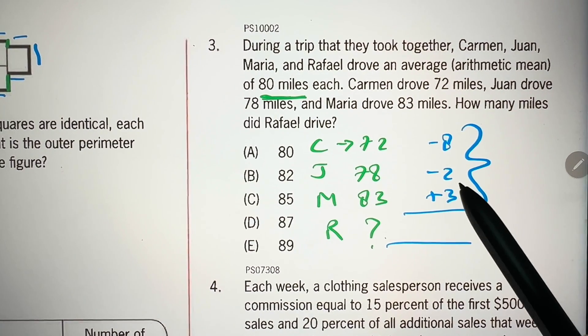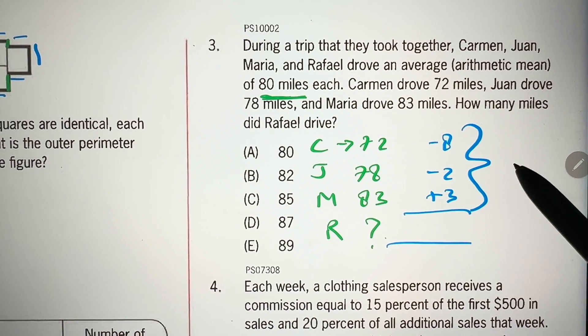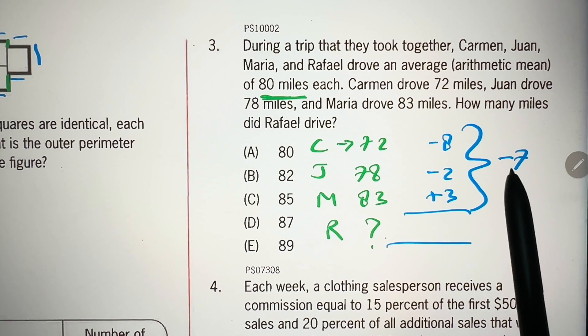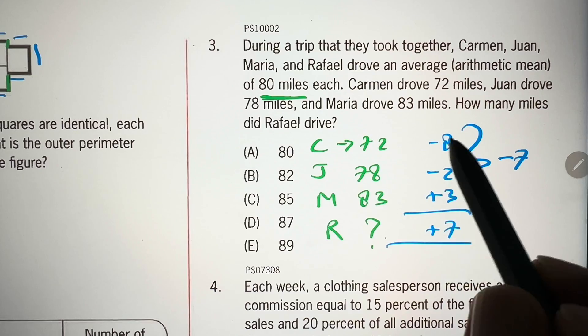minus 8 and minus 2, it's minus 10, plus 3 is minus 7. So, we have to compensate this minus 7 here to make it plus 7. All of this should be 0.